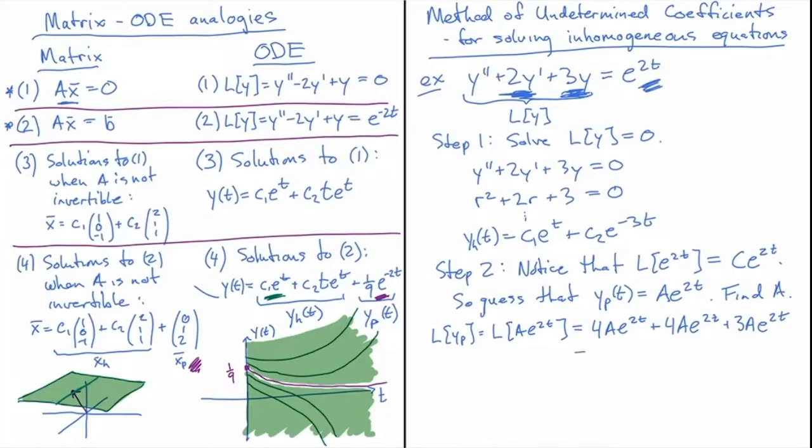And so altogether here I end up with 4 + 4 = 8, plus 3 is 11. So I get 11Ae^(2t). Now I wanted to get e^(2t), right? That's what I've got on the right-hand side here. And so how do I make this equal to just e^(2t) with a coefficient of 1? Well, I've got to choose A = 1/11. And so my general solution, y(t), is going to be equal to the homogeneous solution, c1e^t + c2e^(-3t), plus 1/11 · e^(2t).